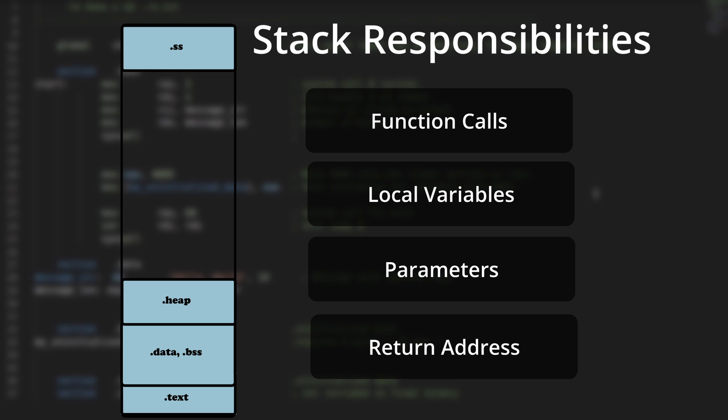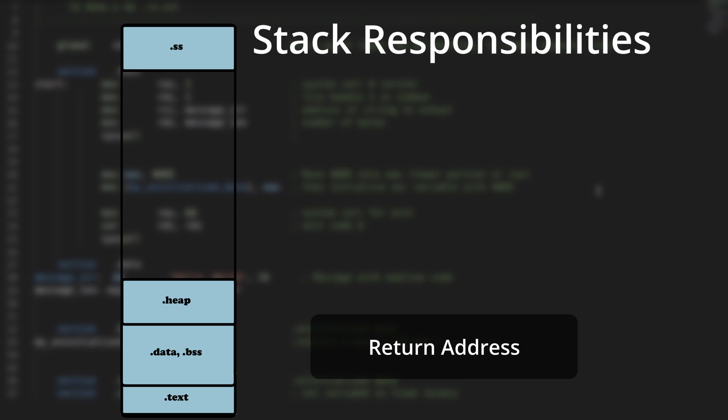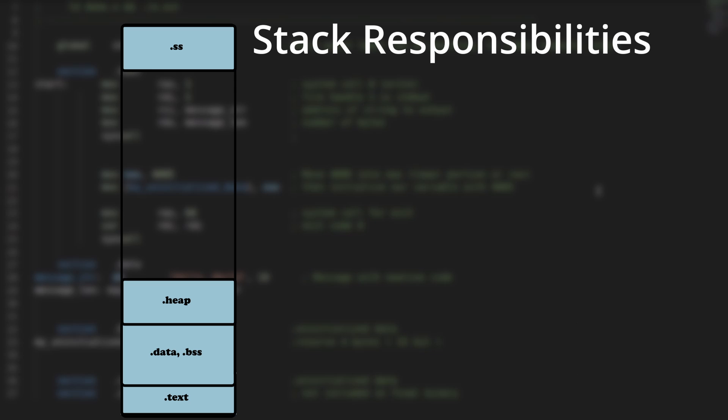It's worth mentioning that any instruction that refers to a memory address is implicitly using segment registers. For example, any jump, return, or call instruction is implicitly invoking the code section, while push, pop, call, and return use the stack segment.